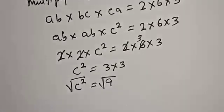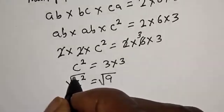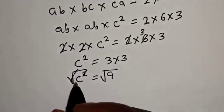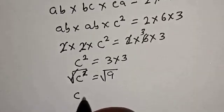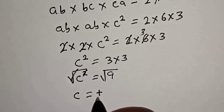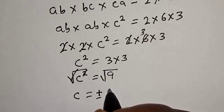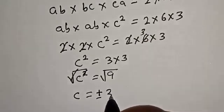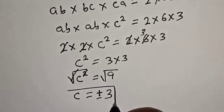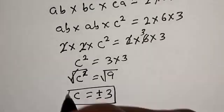Taking the square root of both sides, c is equal to plus or minus 3. That is the value of c.